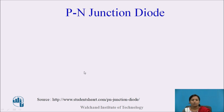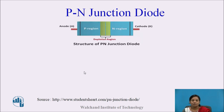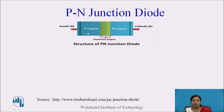The P-N junction diode is the basic building block of semiconductor devices. It is made by joining P-type semiconductor with N-type semiconductor by a special fabrication process. Diode means two electrodes. The terminal connected to the P-side is called the anode, and the terminal connected to the N-side is called the cathode.